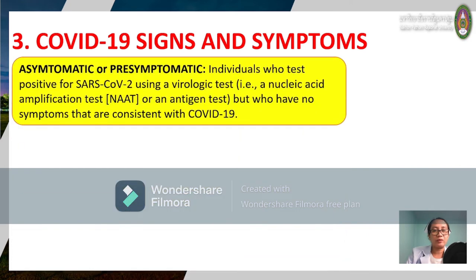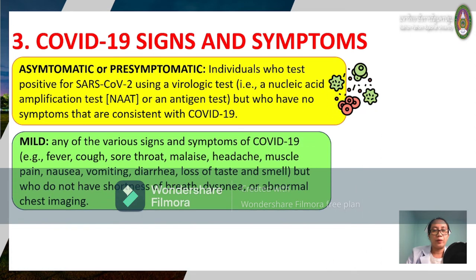Let's find out the signs and symptoms. First, asymptomatic or presymptomatic — no symptoms at all when a person tests positive. For mild symptoms: fever, cough, sore throat, body malaise, headache, muscle pain, nausea, vomiting, diarrhea, and loss of taste and smell — but without shortness of breath, dyspnea, or abnormal chest imaging or X-ray.